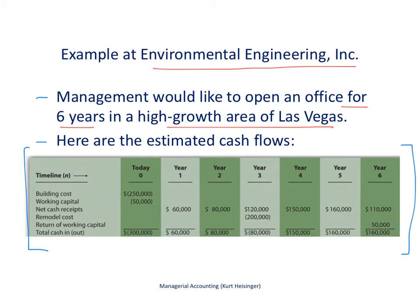The building is going to cost $250,000 — that's money out, a negative amount. We're also going to need to provide some working capital for this new office. Working capital is simply defined as current assets minus current liabilities. Another way to think of it is that this new office is going to need some cash to get started — to help fund accounts receivable until those monies come in. That $50,000 is there for the new office to handle those things, and we'll get that $50,000 back after six years.